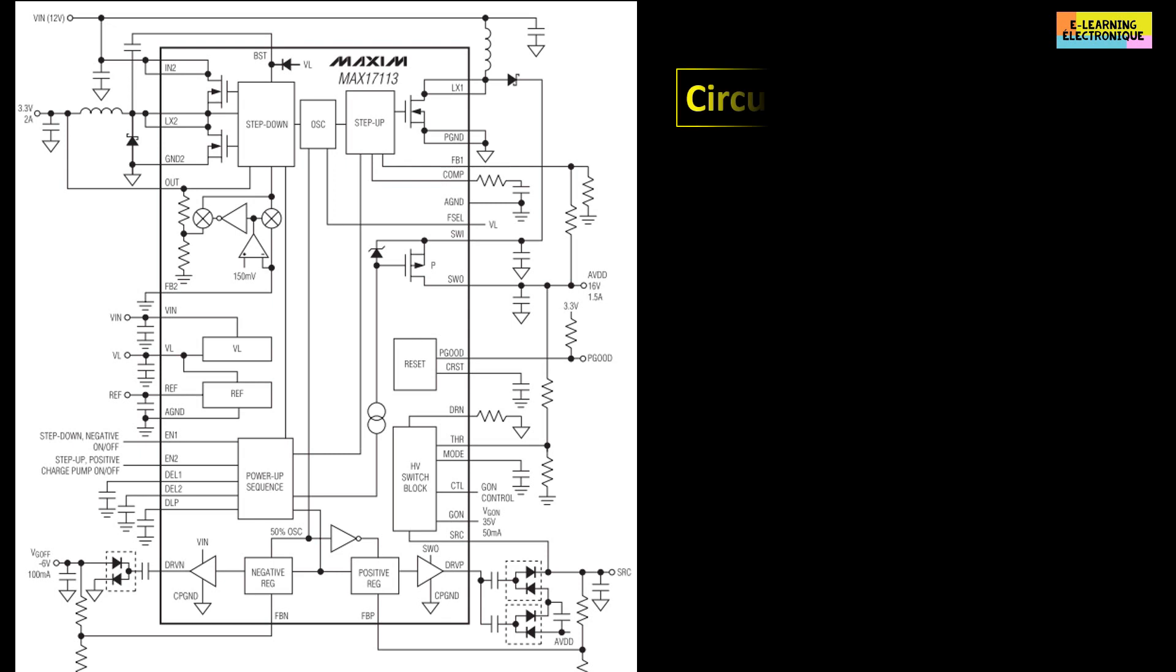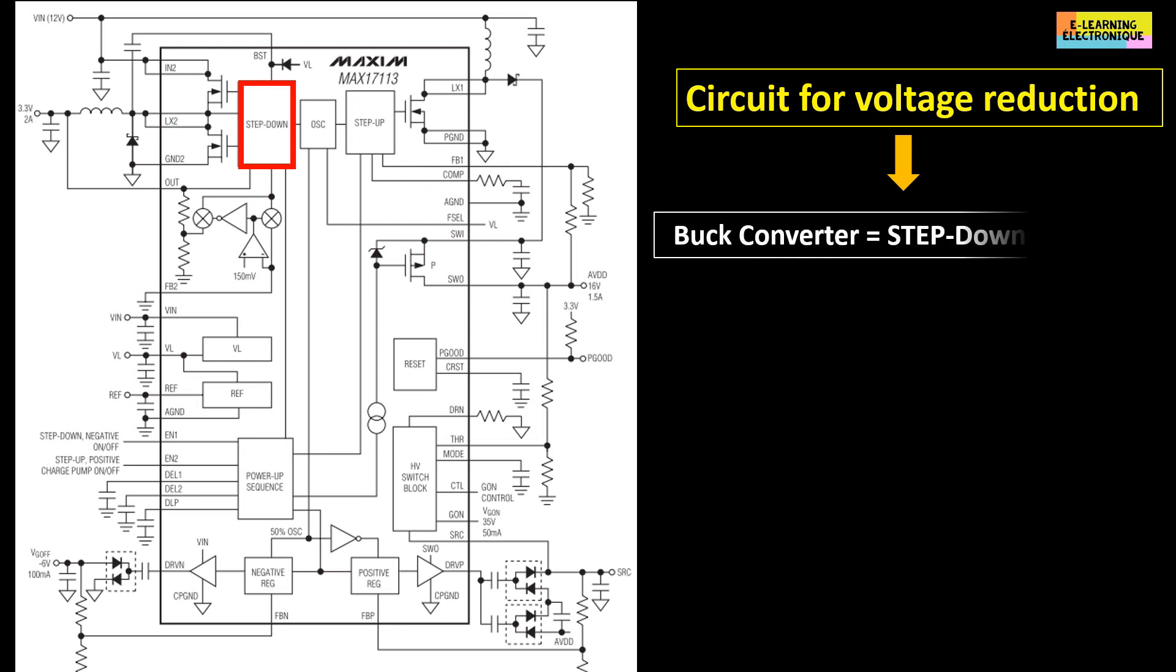Another type of switching mode power supply is the circuit that allows the voltage to be lowered. The circuit is called a buck converter or step-down chopper. As for the boost converter, we find the same components, namely, a source of direct current, a coil, a MOSFET, a diode, an electrolytic capacitor and an oscillator circuit to control the opening and closing of the MOSFET.